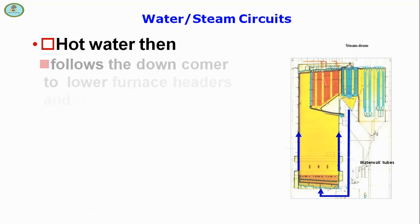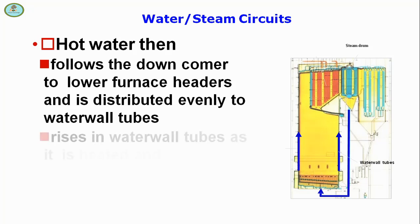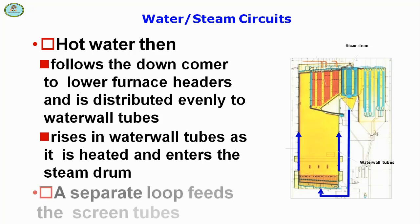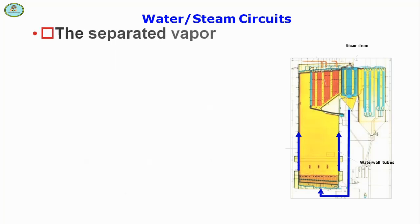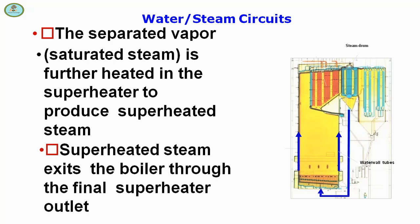Hot water flows through the downcomers to the lower furnace headers and is distributed evenly to the water wall tubes. It rises in the water wall tubes as it is heated and enters the steam drum. A separate loop feeds the screen tubes. The separated saturated steam is further heated in the superheater to produce superheated steam, which exits the boiler through the final superheater outlet.